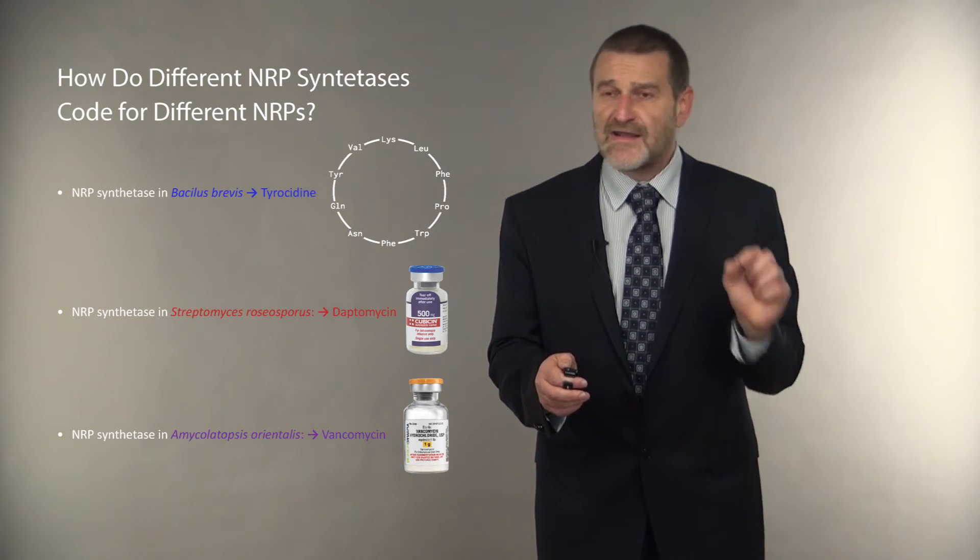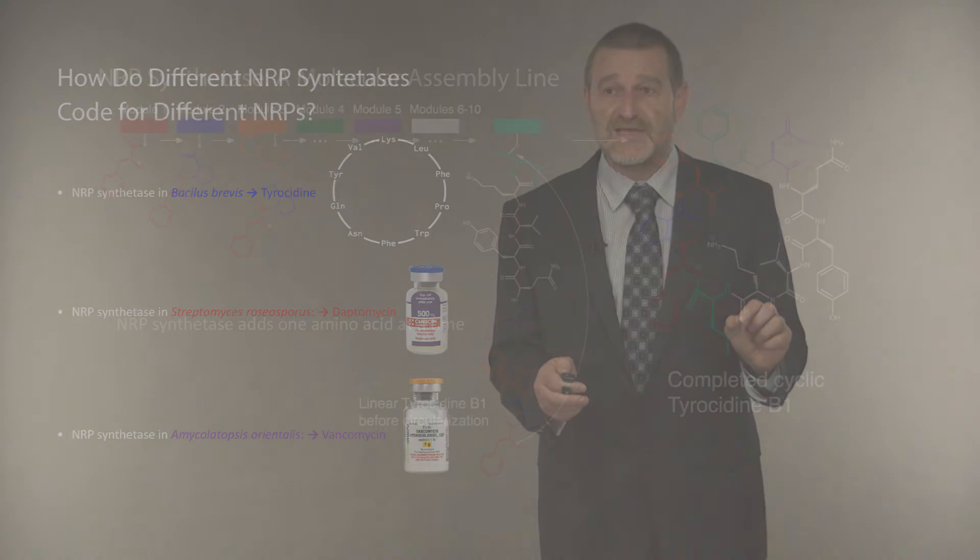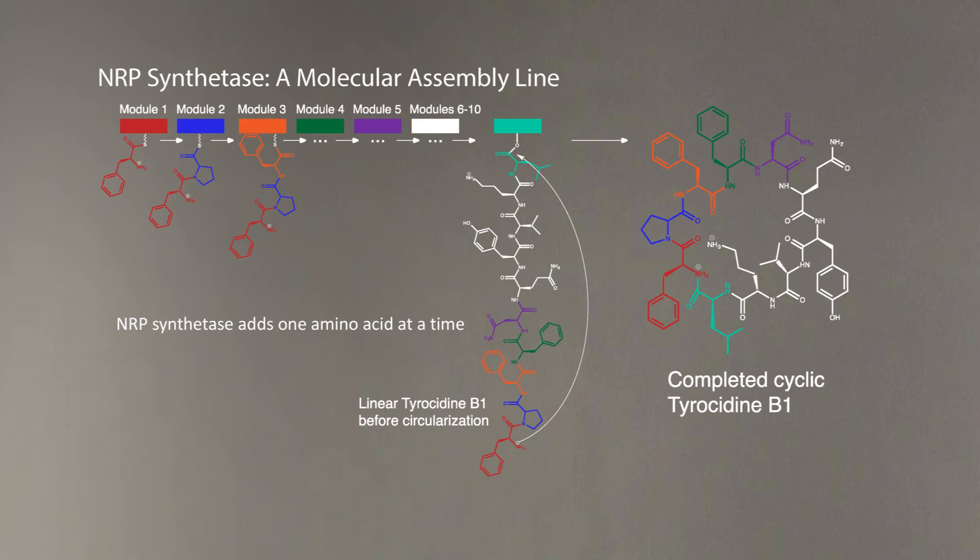However, Marahel knew something about non-ribosomal peptide synthesis. It is performed, as I mentioned, by a giant molecular assembly line, NRP synthetase. And for every amino acid being synthesized, there is a segment in NRP synthetase, roughly 600 amino acids long, called adenylation domain.